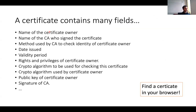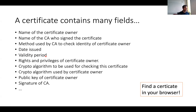A certificate doesn't only contain the identity of the user and the public key. It also contains: the name of the certificate owner, the name of the certificate authority who signed it, information about which cryptographic algorithms were used, which method was used to check the identity of the owner, when the certificate was issued and how long it's valid for, information about rights and privileges, and of course the signature on the public key.